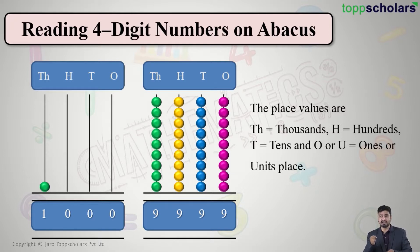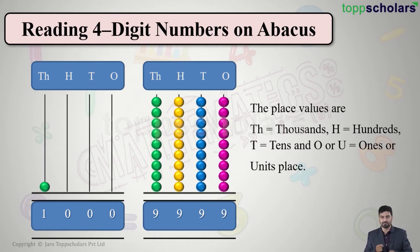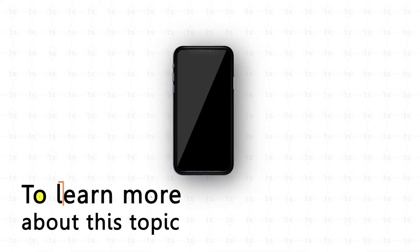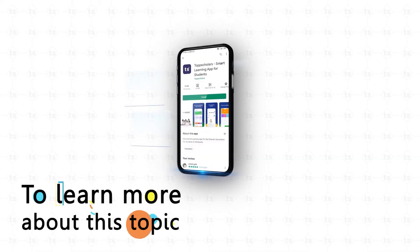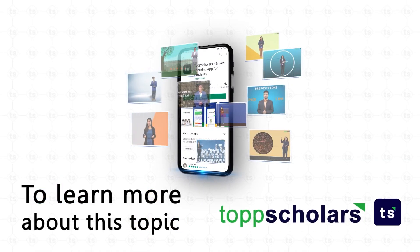Here the place values are: TH stands for thousands, H is hundreds, T is tens, and O stands for ones — also called the units place. This is how you read a four-digit number on an abacus. To learn more about this topic, download the Top Scholars app.